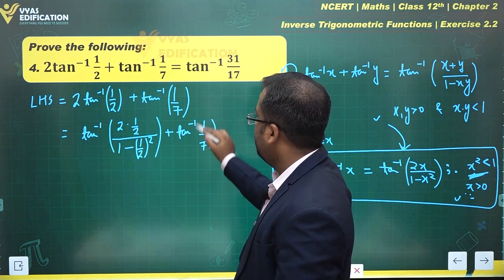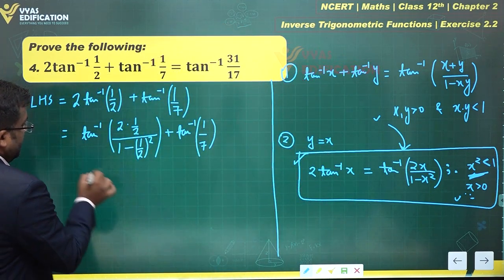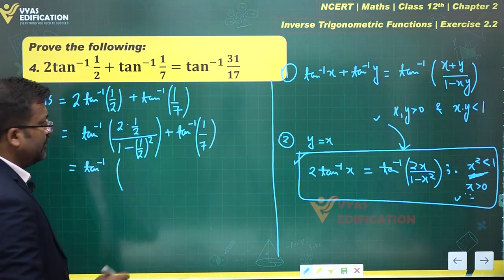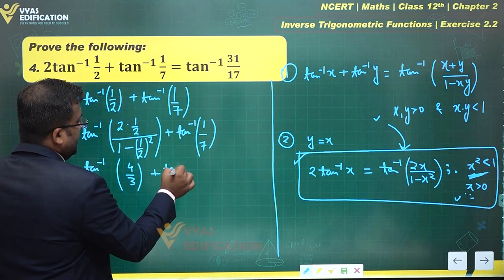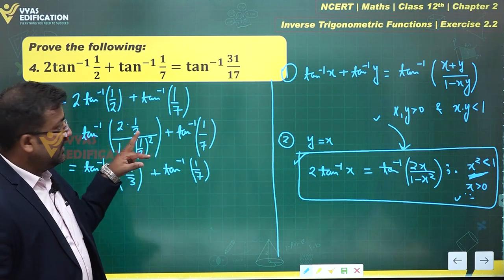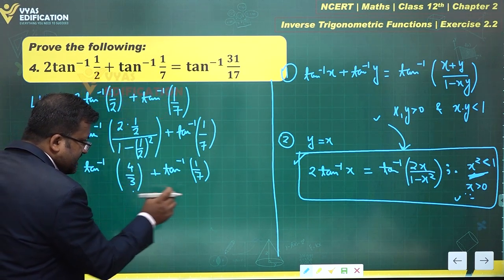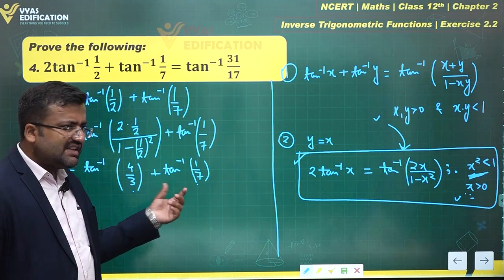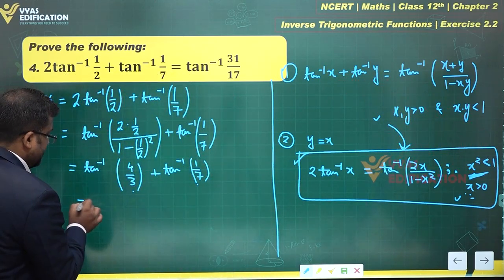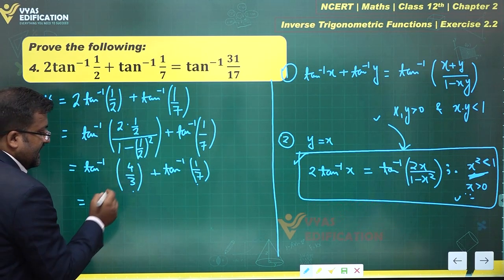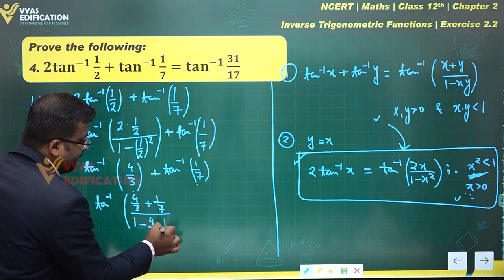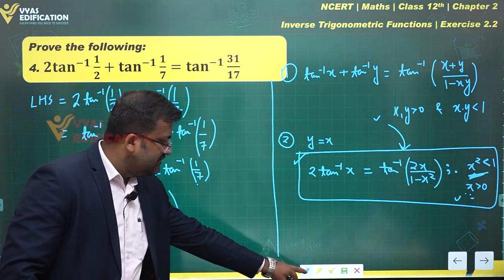The tan inverse (1/7) will remain as it is. Applying the formula: 1 over (1 minus 1/4) equals 1 over (3/4) which is 4/3. So we get tan inverse (4/3) plus tan inverse (1/7). Now observe: both 4/3 and 1/7 are positive, and their product is 4/21, which is less than 1. So we can apply tan inverse x plus tan inverse y equals tan inverse (x+y)/(1-xy).